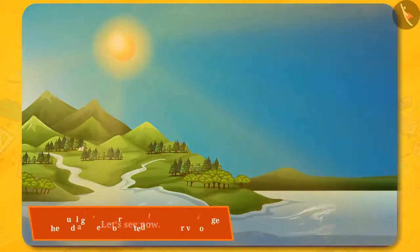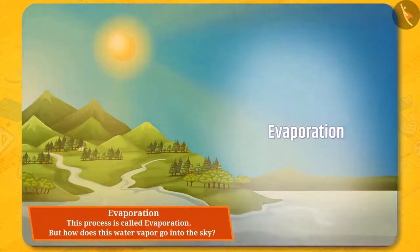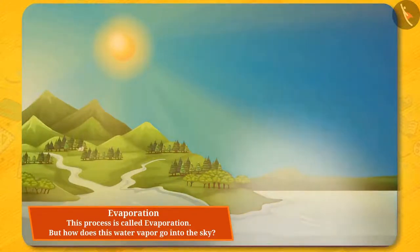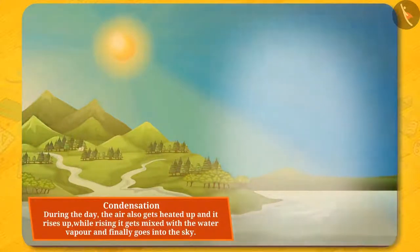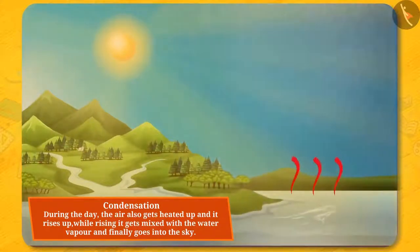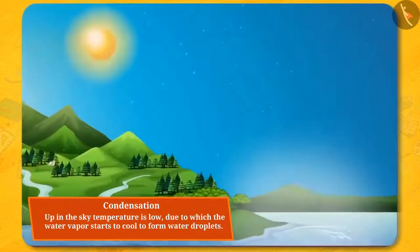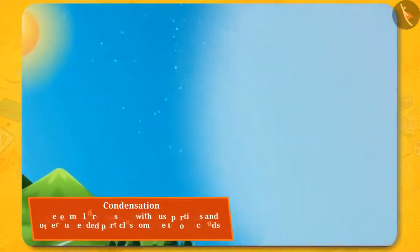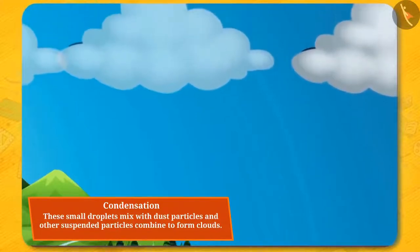Let's see now. Due to sunlight, the surface of water bodies gets heated and gets converted into water vapour. This process is called evaporation. But how does this water vapour go into the sky? Due to sunlight, during the day, the air also gets heated up and it rises. While rising, it gets mixed with the water vapour and finally goes into the sky. Up in the sky, temperature is low, due to which water vapour starts to cool to form water droplets. These small droplets mixed with dust particles and other suspended particles combine to form clouds.